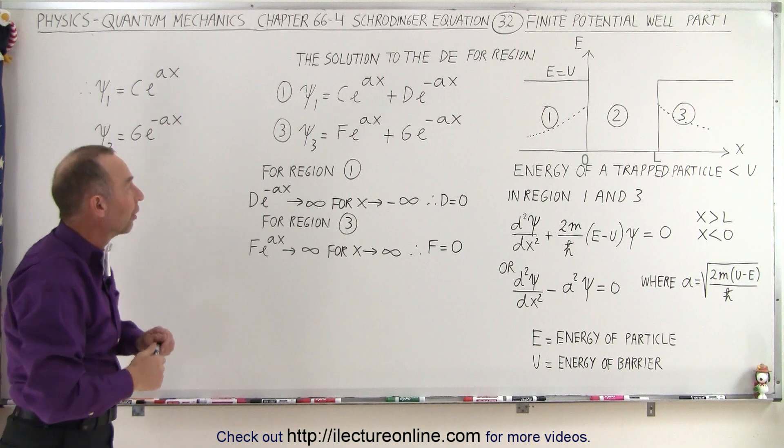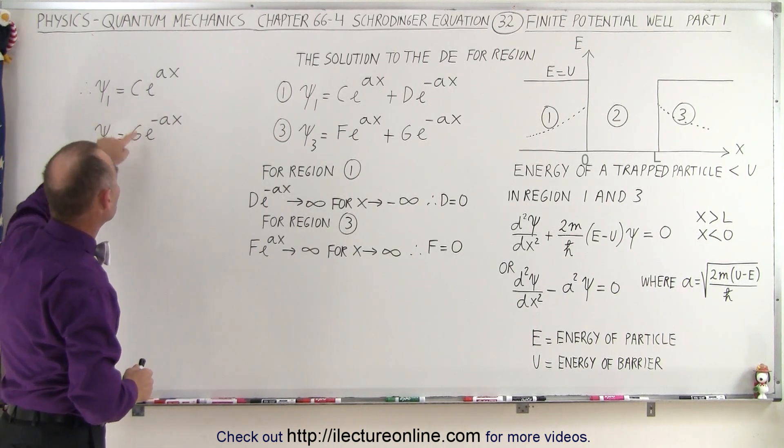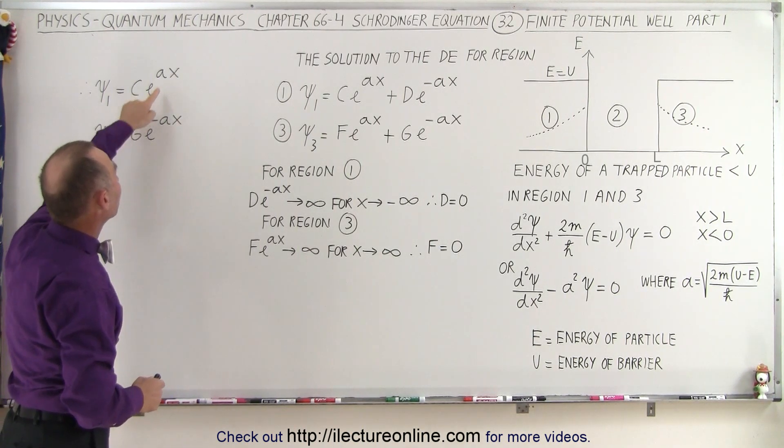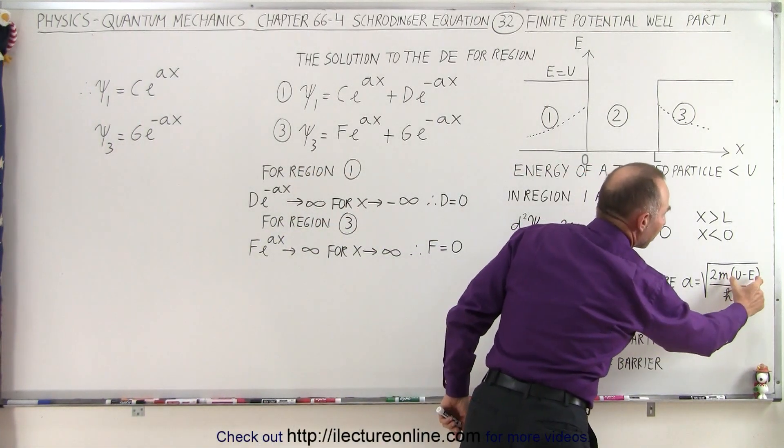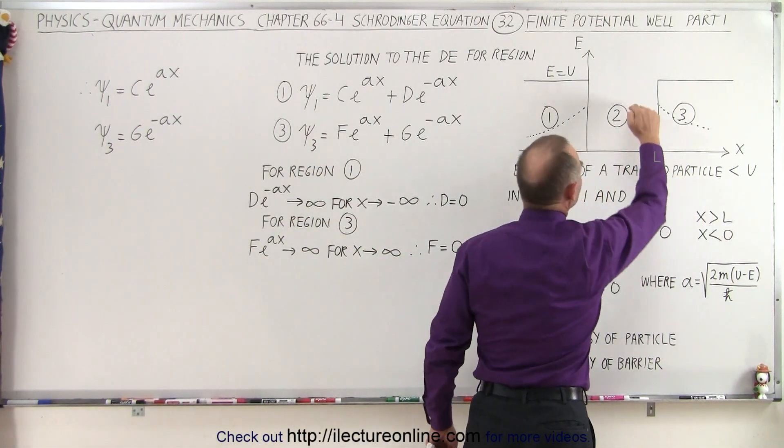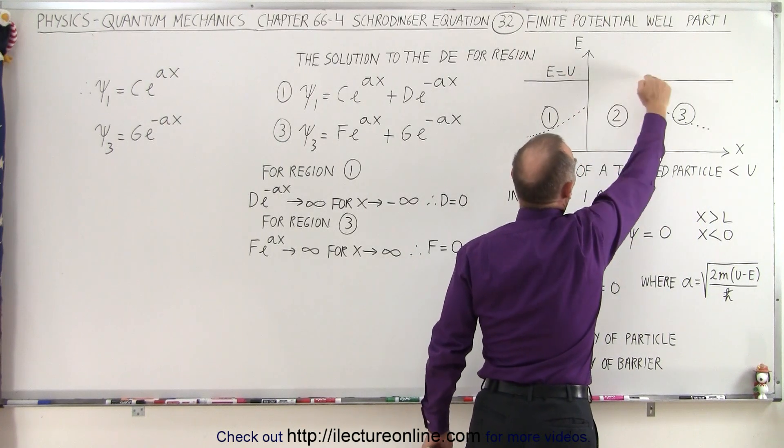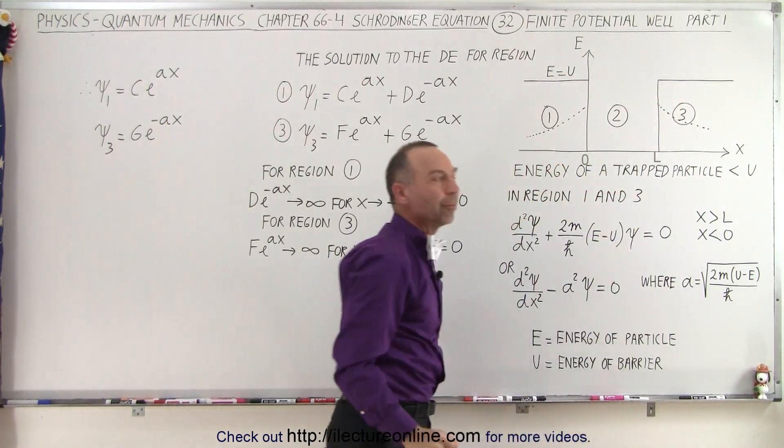So that's a general approach. Of course, it depends on the value for C and G, and it depends on the value for A, which is determined primarily by the mass of the particle and by the difference in the energy of the particle in this region versus the energy required to get over the barrier.